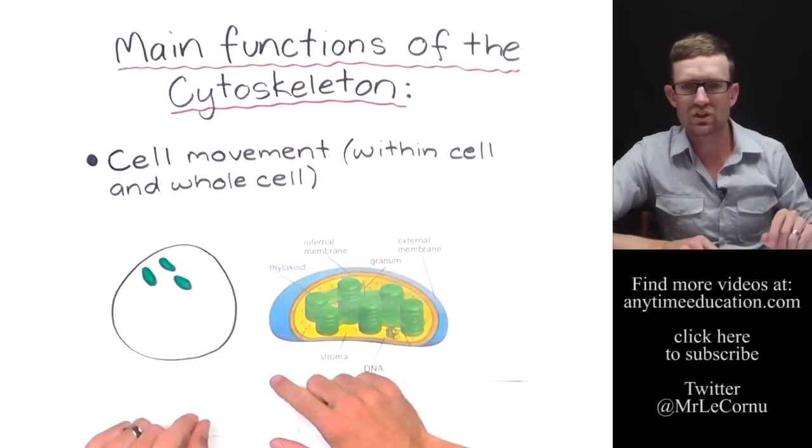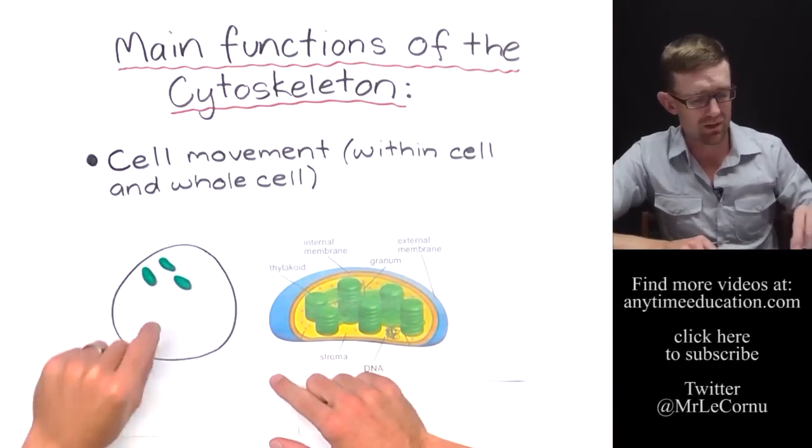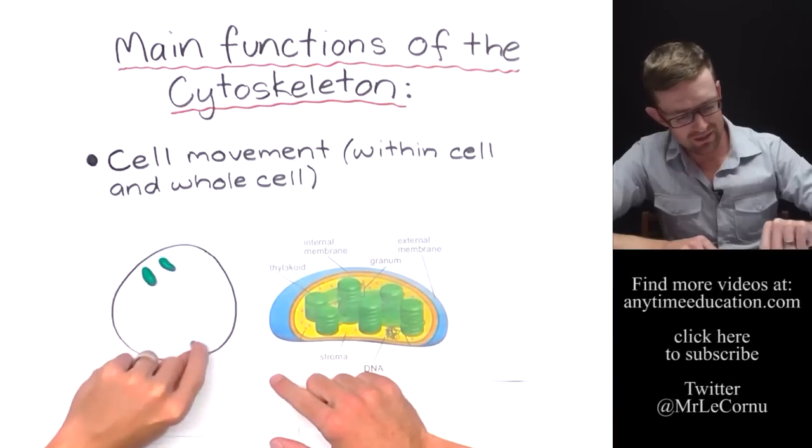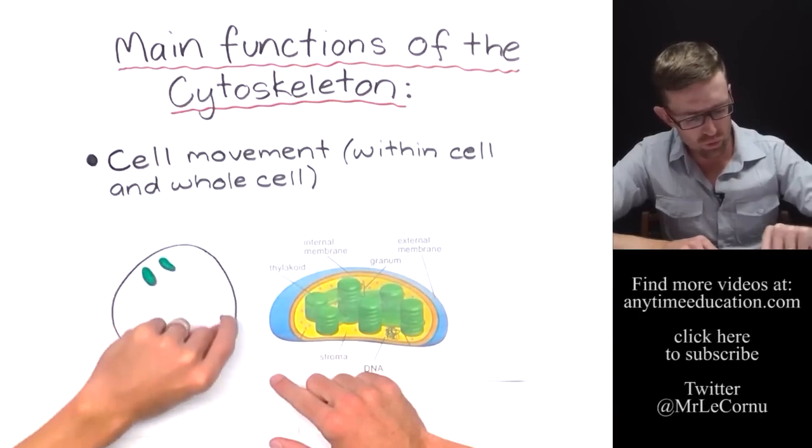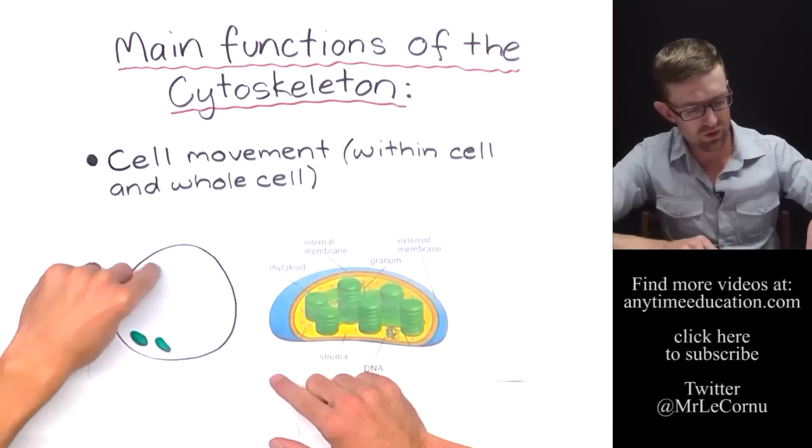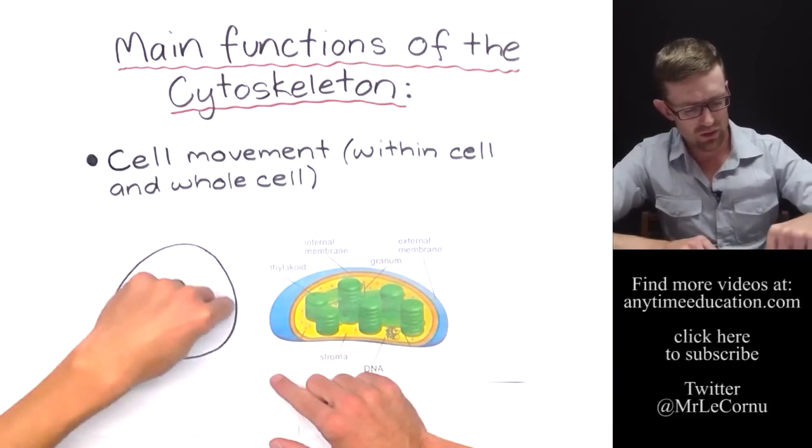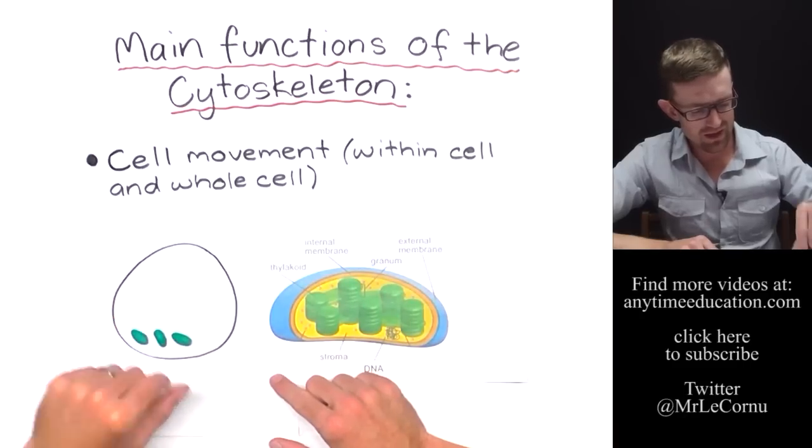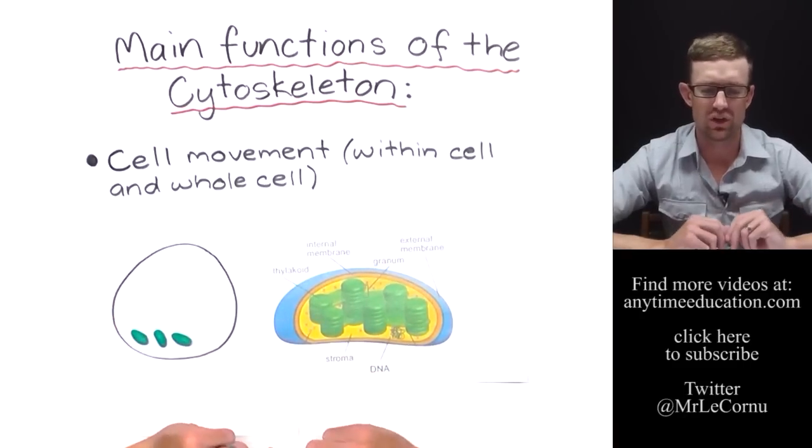The other one is called cytoplasmic streaming, which is where the chloroplasts are actually able to move all the way around the cell to an actual different location within the cell. And they move along the cytoskeleton and it's called cytoplasmic streaming.